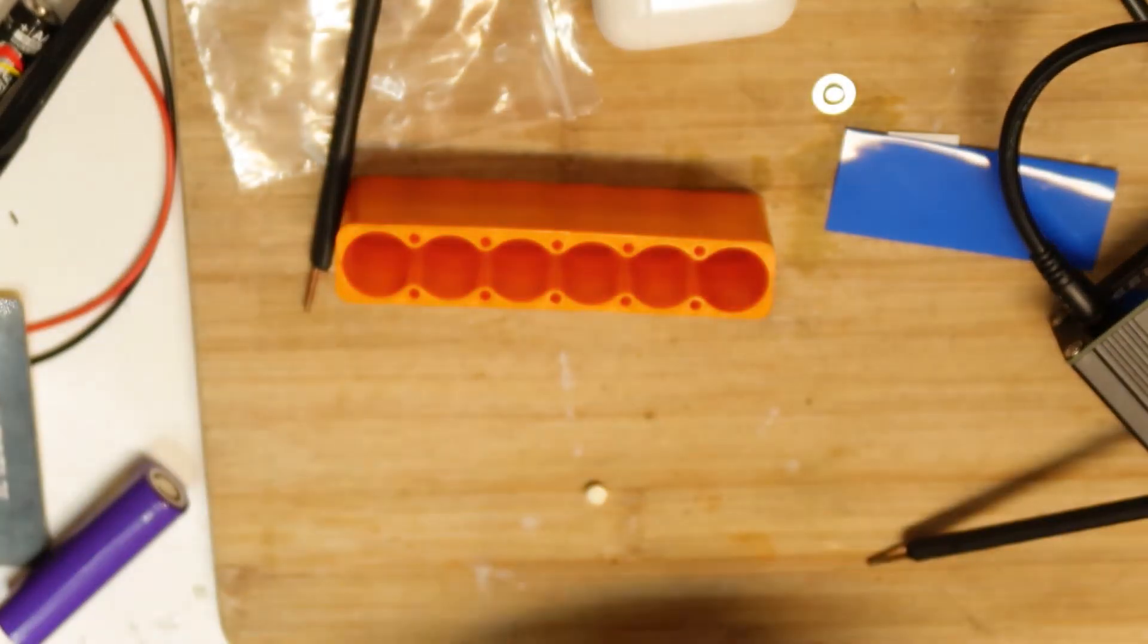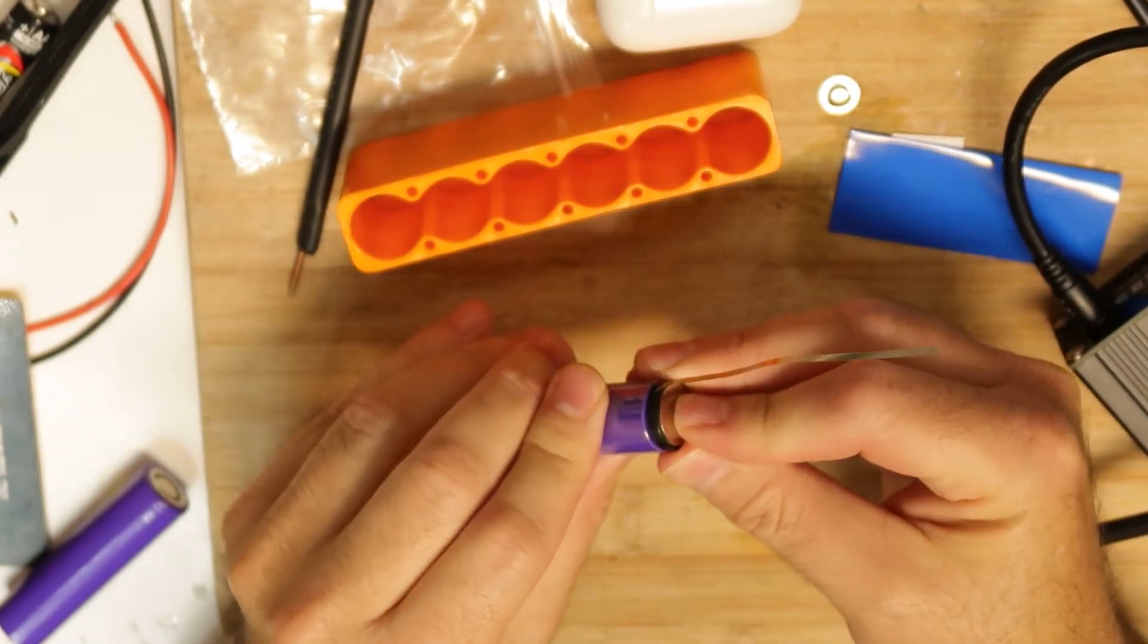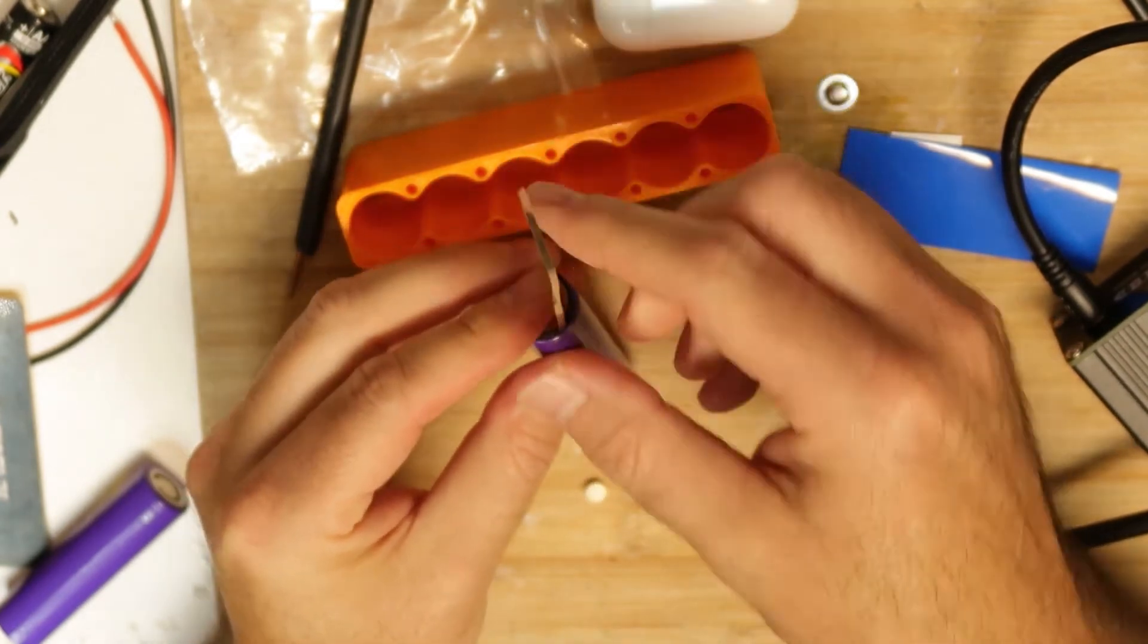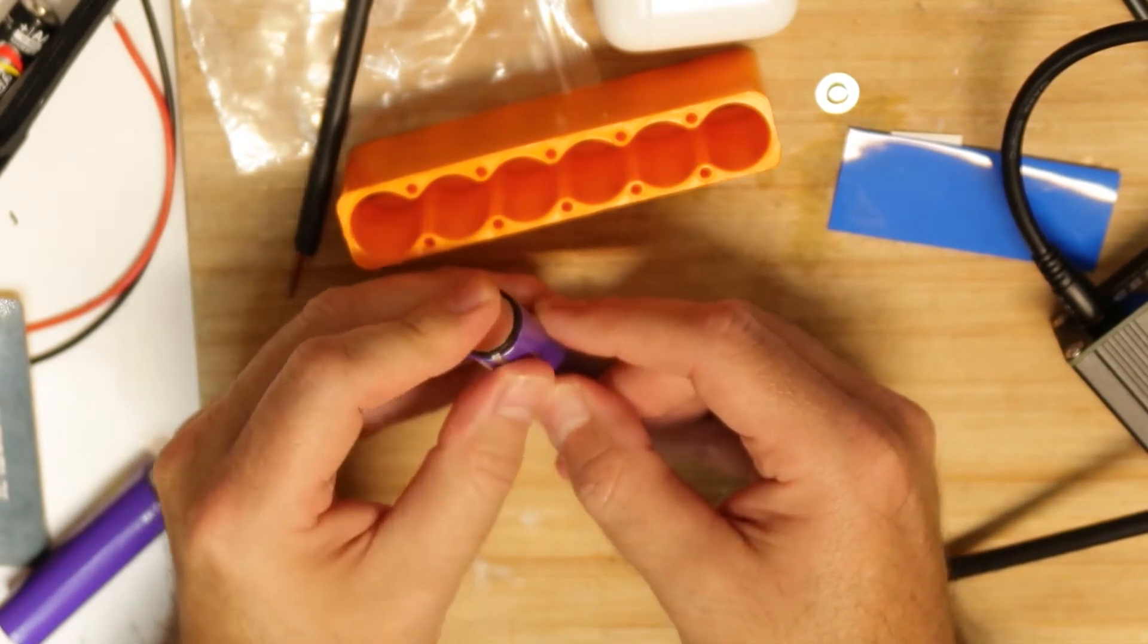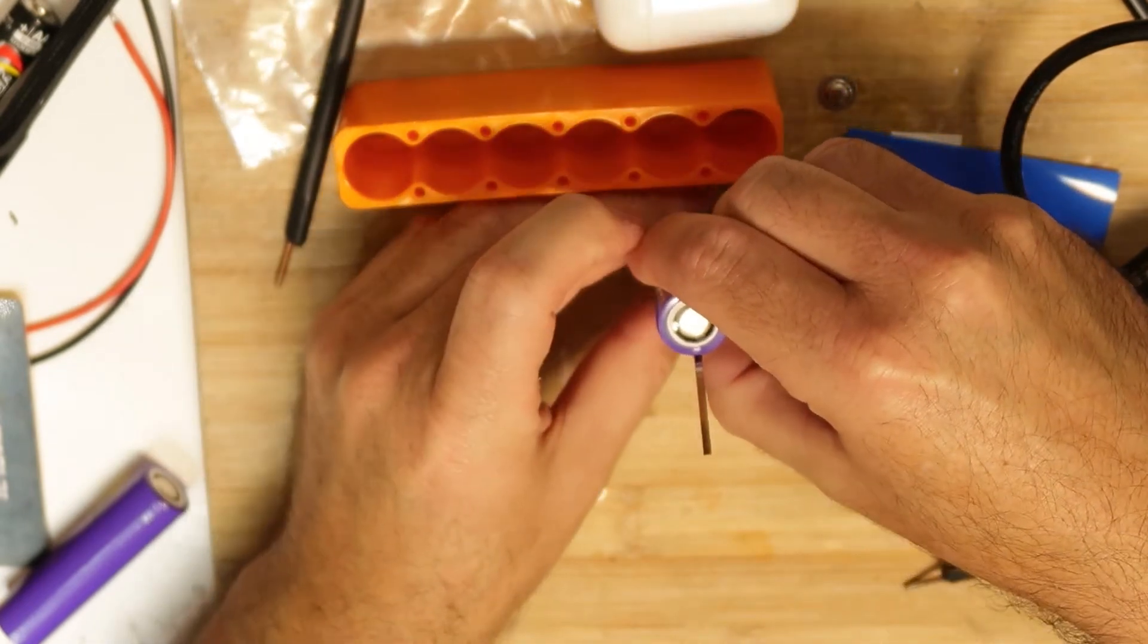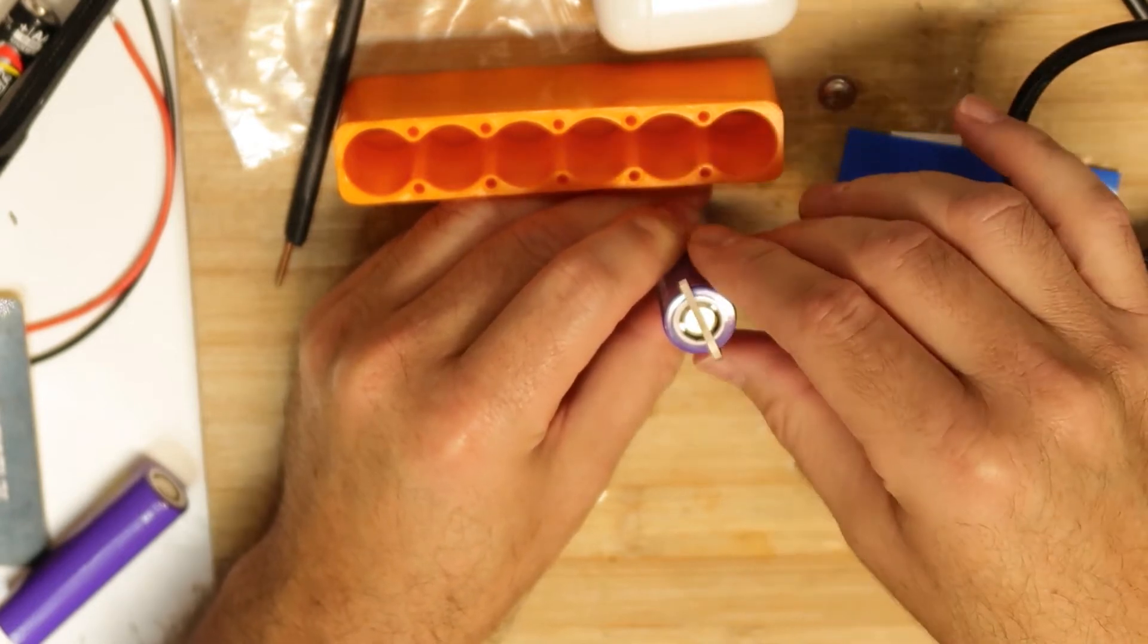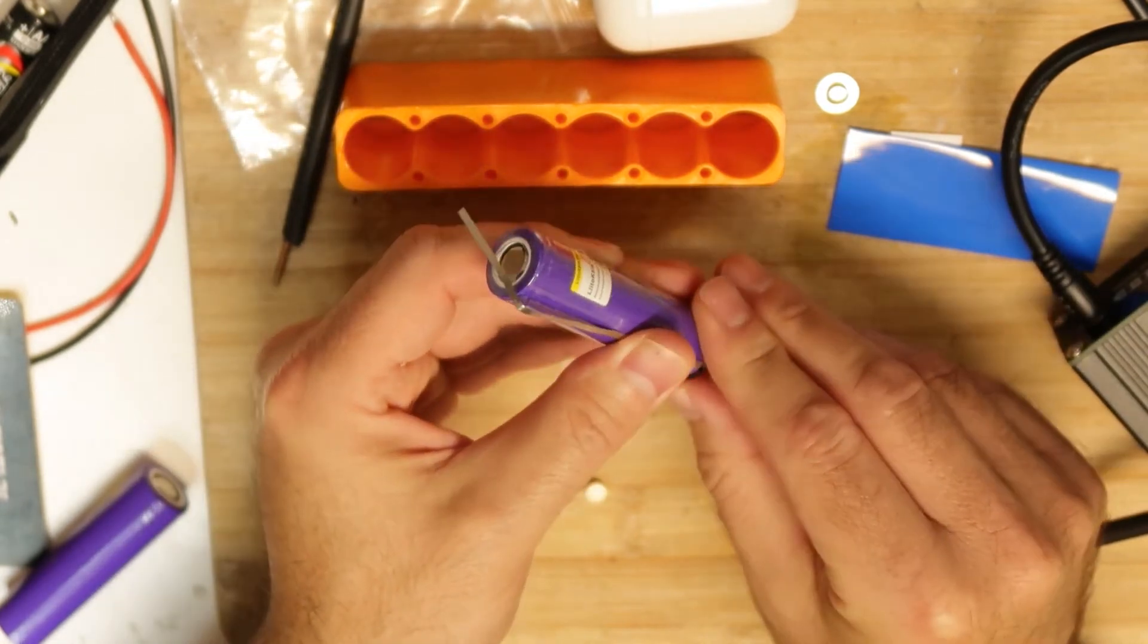So now I can connect it like this, and then the other part will go to the positive of this battery. Something like this. We do it short in order to see that nothing explodes and nothing gets hot, just to make sure. So it looks okay.